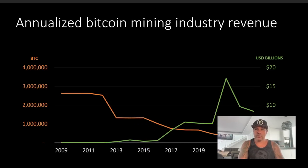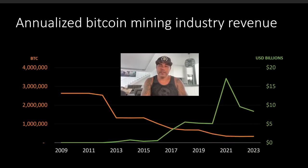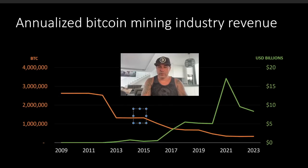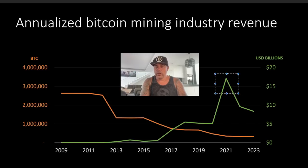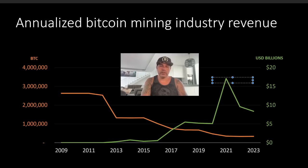This next chart shows the annualized Bitcoin mining industry revenue. The amount of Bitcoin being mined is declining over time, as shown by the orange line, but the fees earned in billions are going up — because Bitcoin is gaining more value and seeing more adoption and use. This is a beautiful chart that simplifies exactly why miners are profitable and why Bitcoin will increase in price during the next halving.